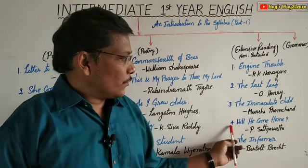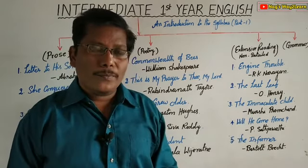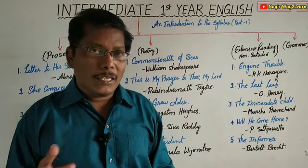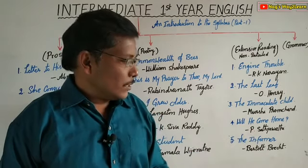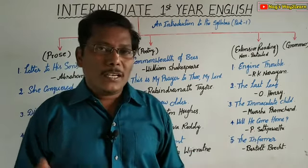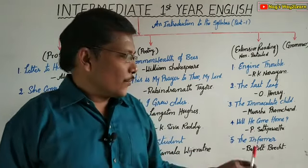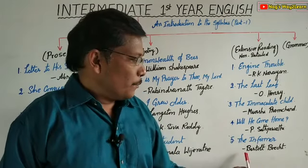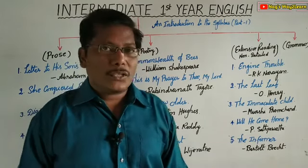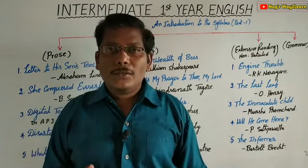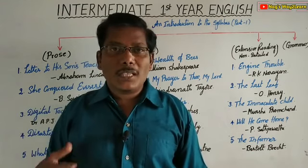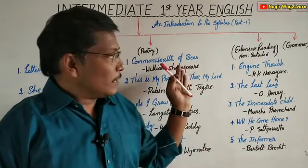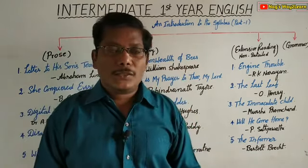The fourth one is 'Will He Come Home', written by P. Sachyavati. And finally, the fifth one is 'The Informer', written by Bertolt Brecht. These are the lessons and poems given in the Prose, Poetry, and Extensive Reading sections.